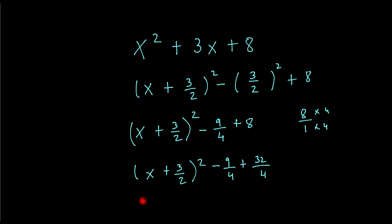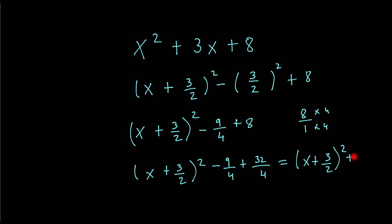So my final answer would be x plus 3 over 2 all squared. Now minus 9 plus 32 — so that's a negative, so in other words it'll be 32 subtract 9, which will be plus 23 over 4. And that would be my final answer.